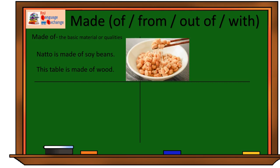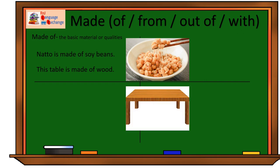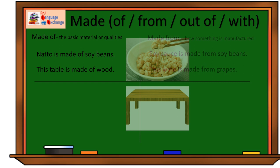Take a look at this picture. Can you clearly tell or see soybeans in there? How about the second picture? Can you tell the material used to make this table? If you say yes and it is wood, then you should use made of. This table is made of wood.